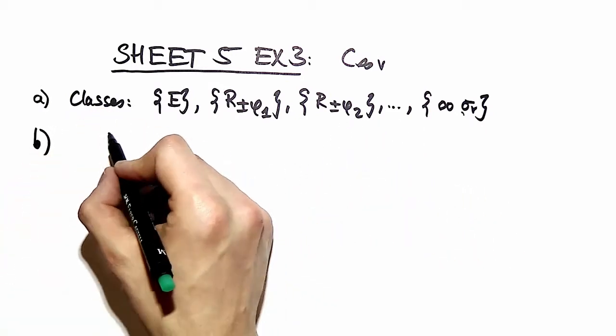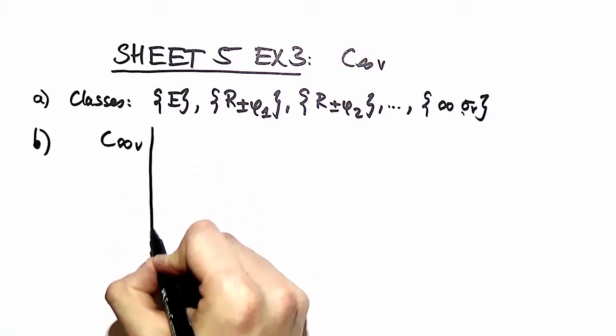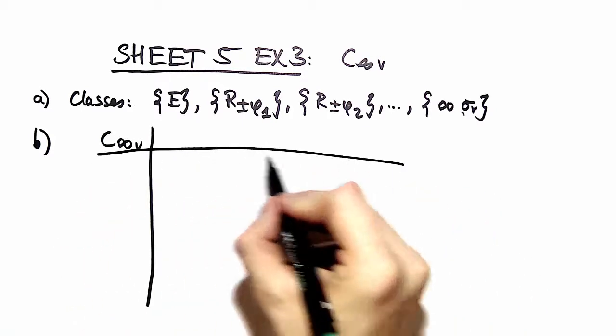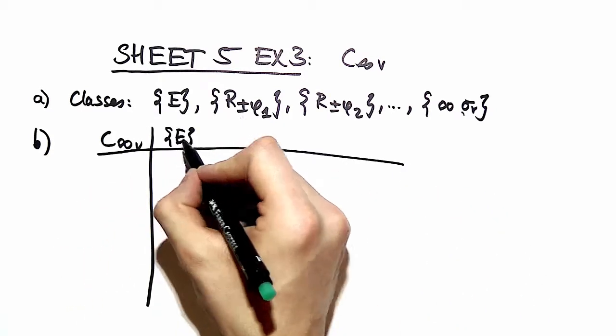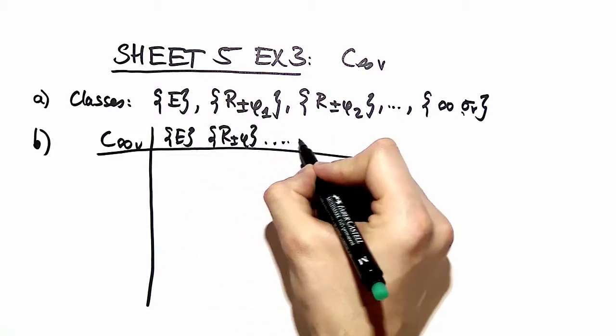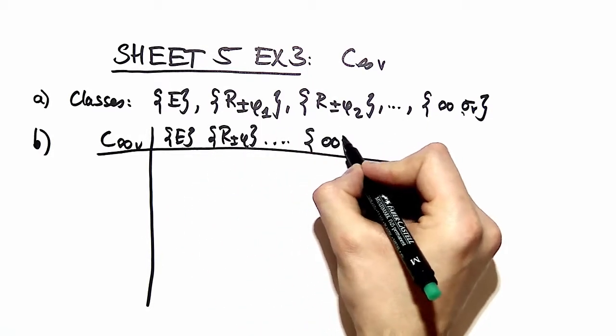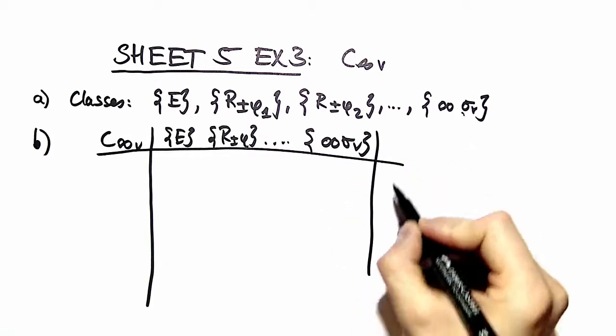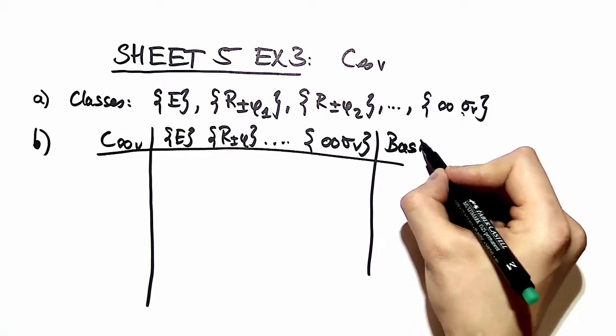So that's enough to start off by writing down the character table right here. You have the conjugacy classes on top, and then you have a separate column for the basis function.